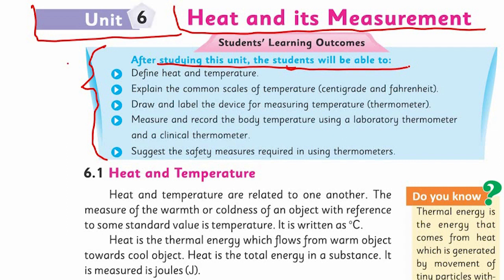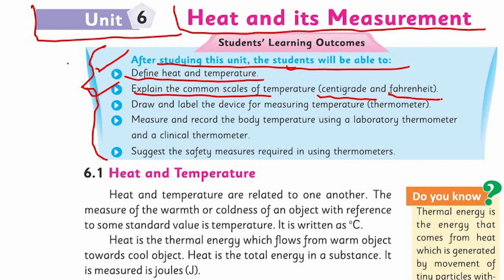My first SLO is that you all understand these 5 SLOs. SLO number 1: to define heat and temperature — you should be able to define heat and temperature separately. SLO number 2: explain the common scales of temperature, meaning centigrade and Fahrenheit — you should be able to describe centigrade and Fahrenheit.